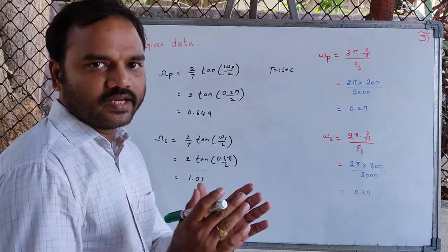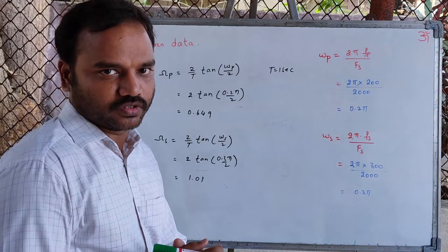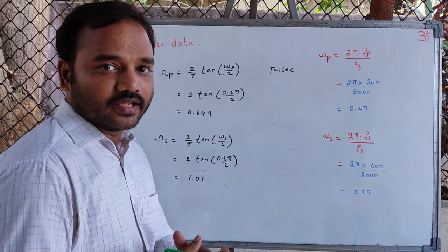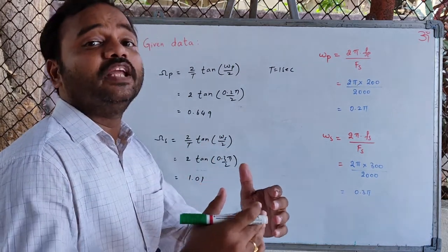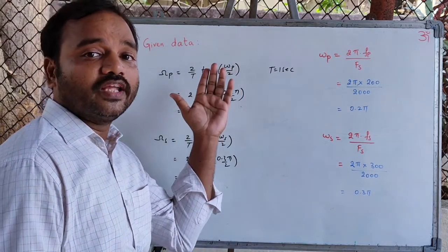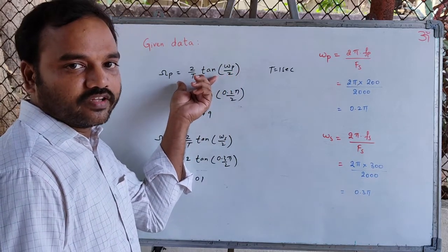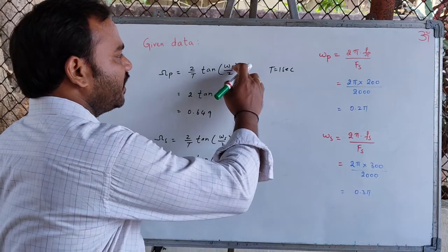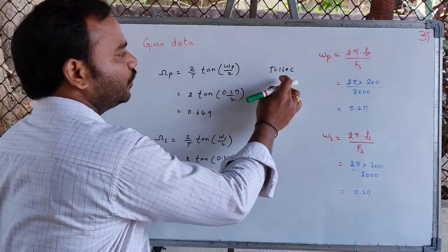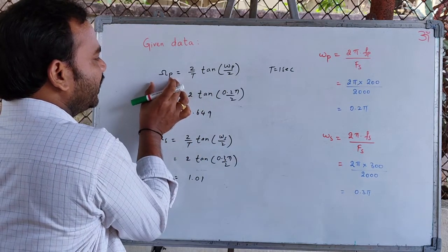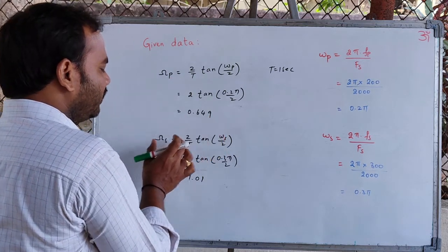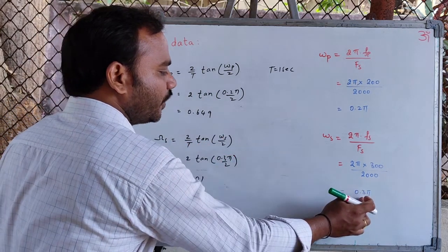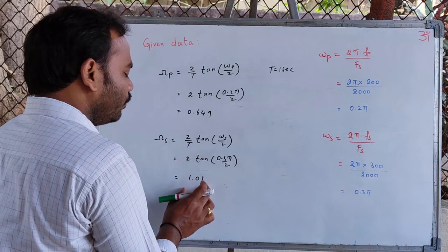We want to design a digital low-pass Butterworth filter using bilinear transformation. In order to use bilinear transformation, we need to find the analog frequencies by pre-warping the digital frequencies. The pre-warping formula is: analog frequency = (2/T) × tan(digital frequency / 2). Assuming T = 1 second and substituting the passband frequency of 0.25π, the analog passband frequency is 0.649 rad/s. Similarly, computing the analog stopband frequency using the stopband frequency of 0.3π, we obtain 1.01 rad/s.